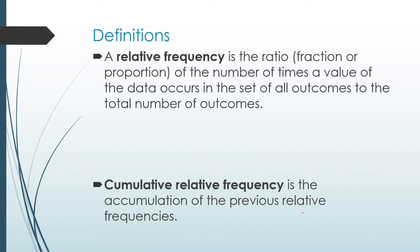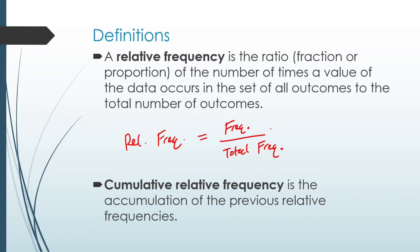A relative frequency is the ratio, fraction, or proportion of the number of times a value of the data occurs in the set of all outcomes to the total number of outcomes. To calculate the relative frequency, we use this formula: relative frequency equals frequency divided by total frequency, and remember this number is a fraction or percentage. Cumulative relative frequency is the accumulation of the previous relative frequencies — to calculate it, we add previous values together.